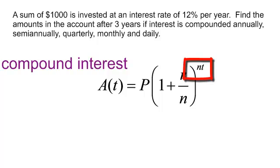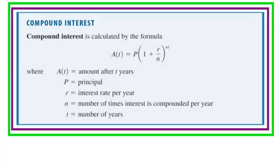And that is raised to the NT. Once again, N is how many times it is compounded per year and T is how many years you're going to leave your money in the bank. So here is my formula for compound interest and what each variable stands for.